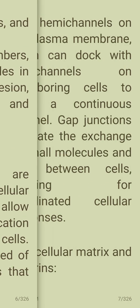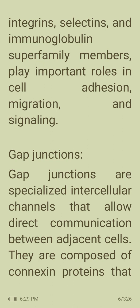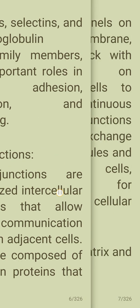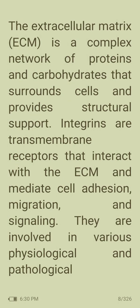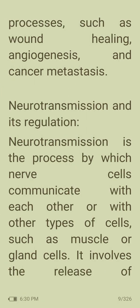Gap junctions are specialized intercellular channels that allow direct communication between adjacent cells. They are composed of connexin proteins that form hemichannels on the plasma membrane, which dock with hemichannels of neighboring cells to form a continuous channel. Gap junctions facilitate the exchange of small molecules and ions between cells, allowing for coordinated cellular responses. The extracellular matrix (ECM) is a complex network of proteins and carbohydrates surrounding cells and providing structural support.